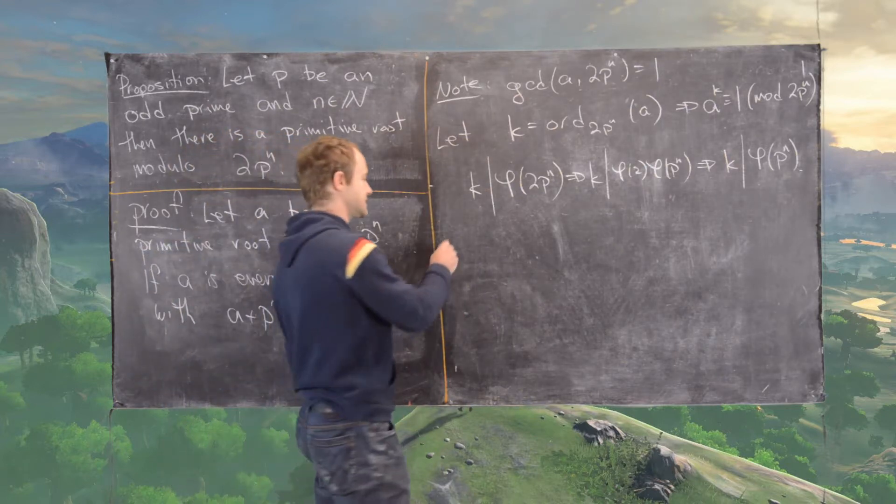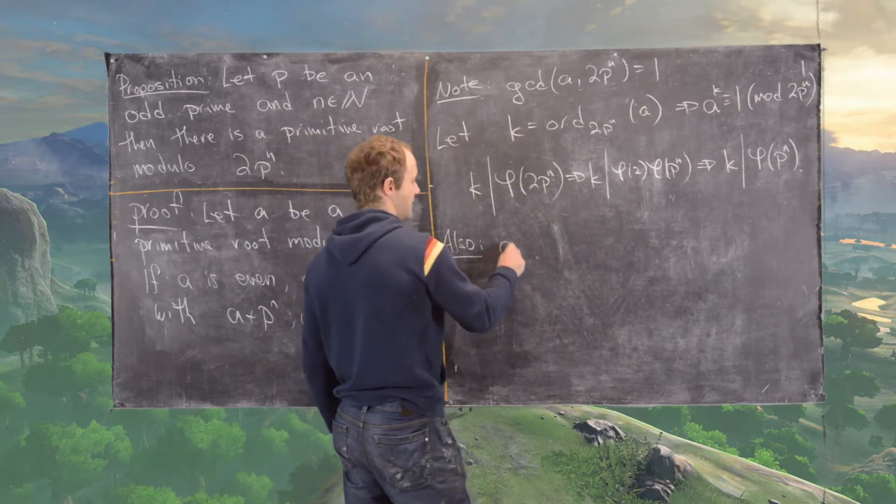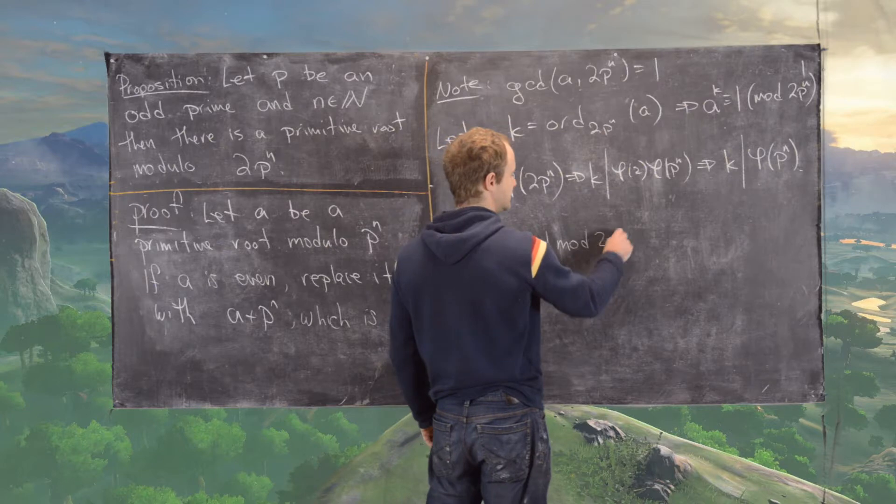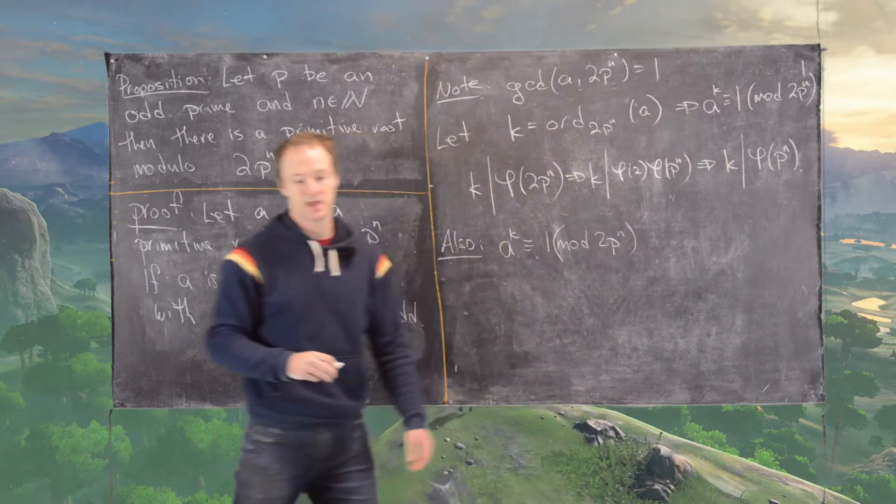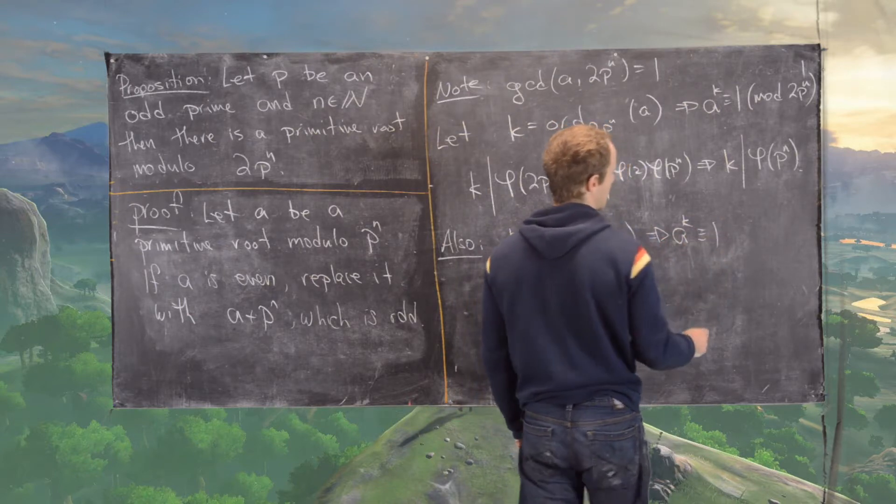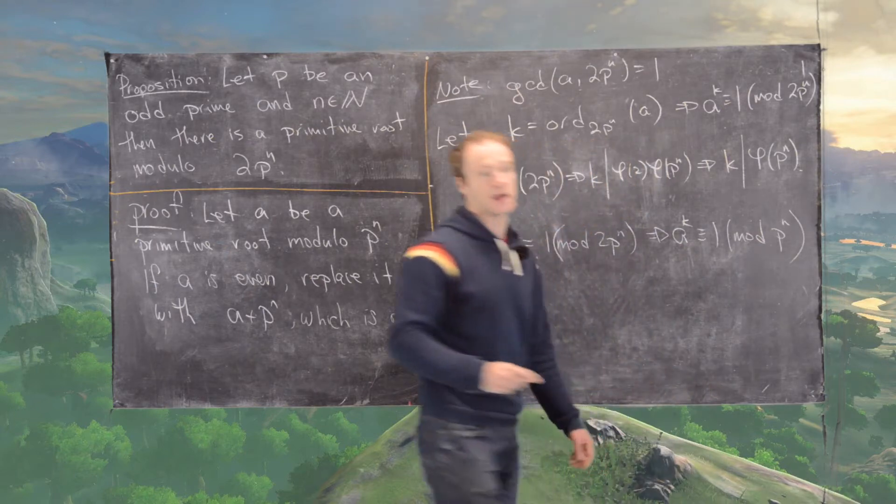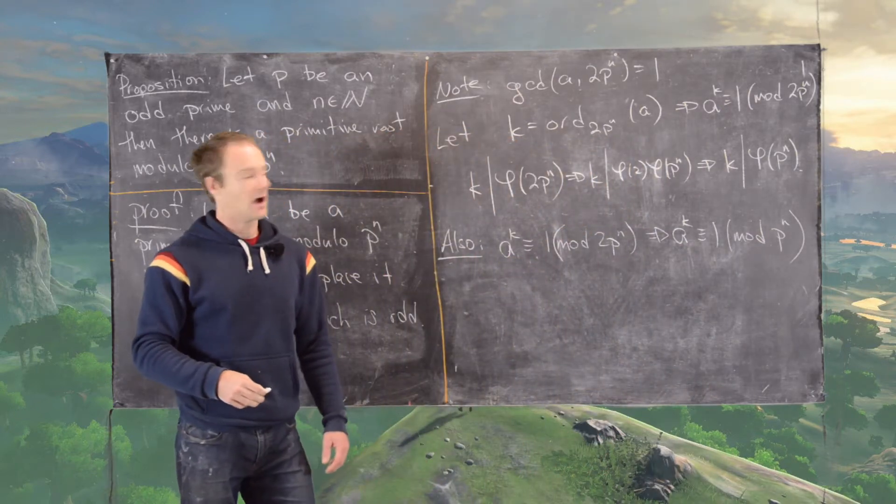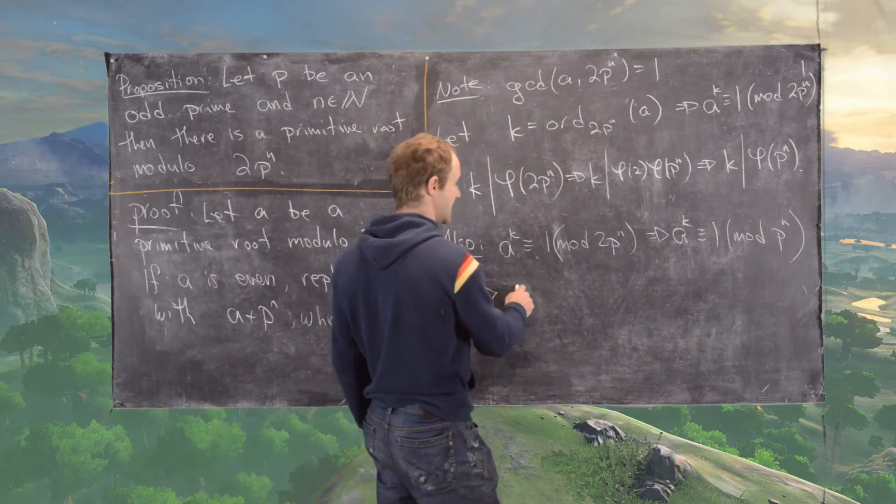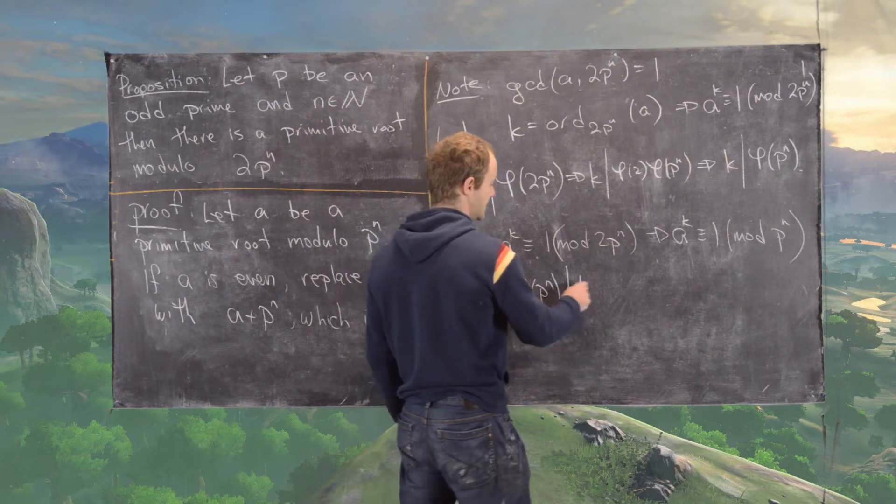Also notice that since a^k is congruent to 1 mod 2p^n, this tells us that a^k is also congruent to 1 mod p^n, which tells us that phi(p^n) must divide k.